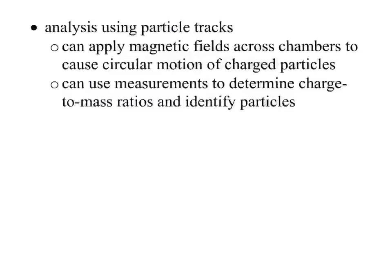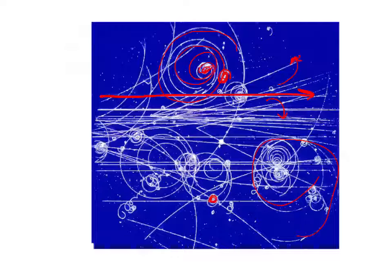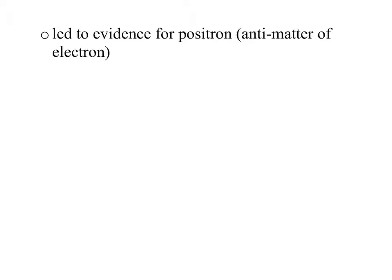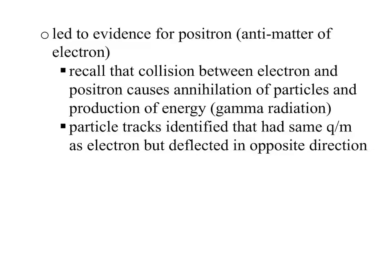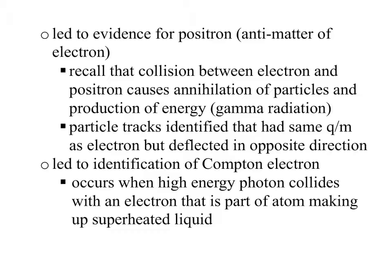Using all those measurements, we determine charge-to-mass ratios and identify particles. This is how we figured out about antimatter — this led to evidence for a positron. A positron is very different from a proton; a proton will make a very big path. If we see one really tight path going one way and one really tight path going the opposite way, it looks exactly like an electron but making the exact opposite path. This also led to identification of the Compton electron — how we knew an electron was being ejected when a high-energy photon was incident upon metal.